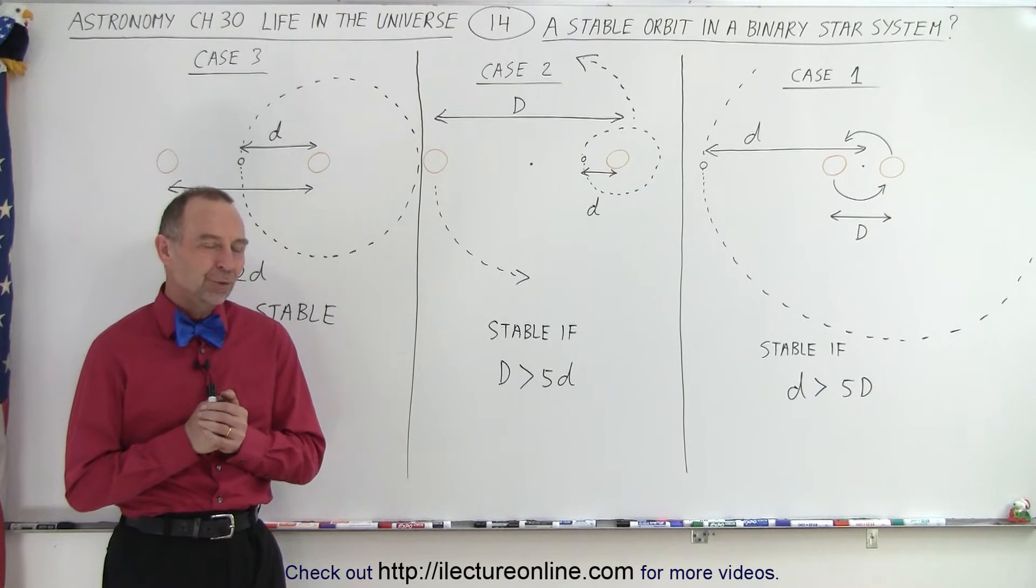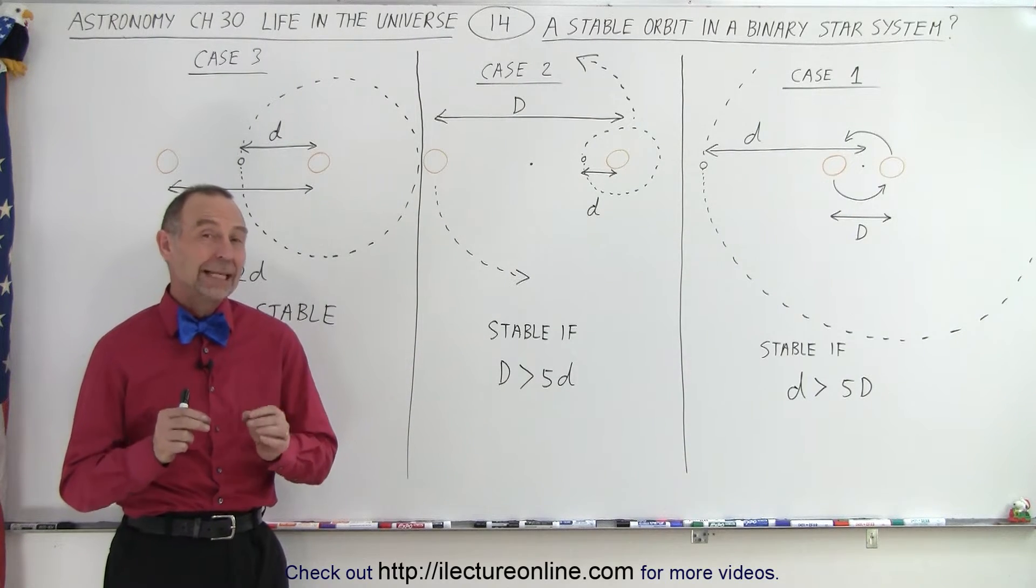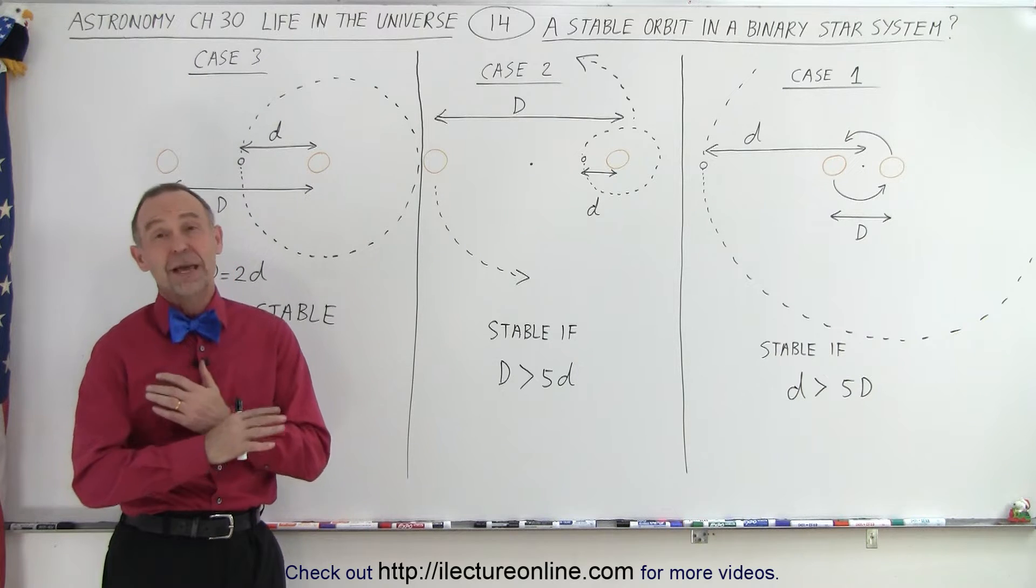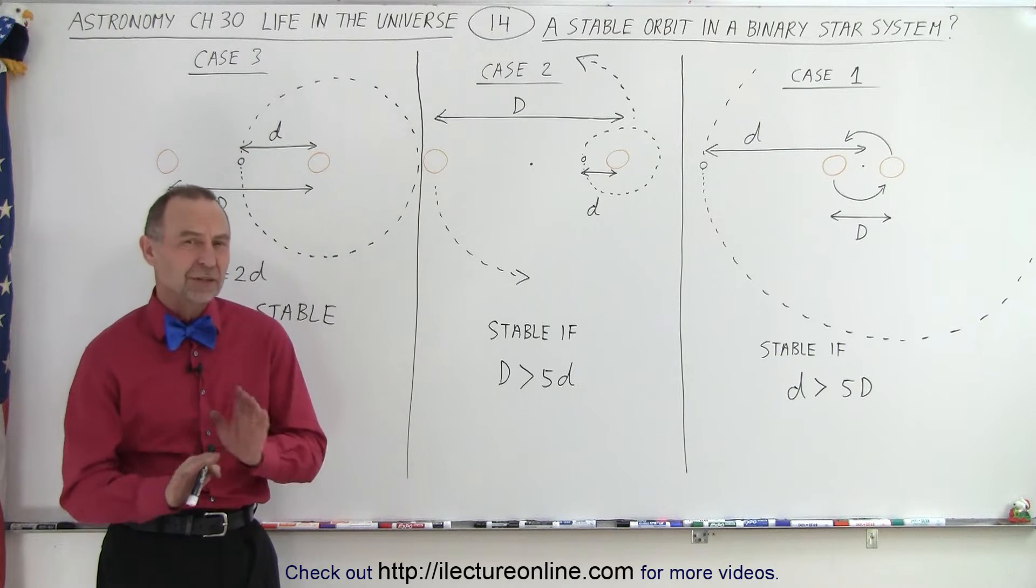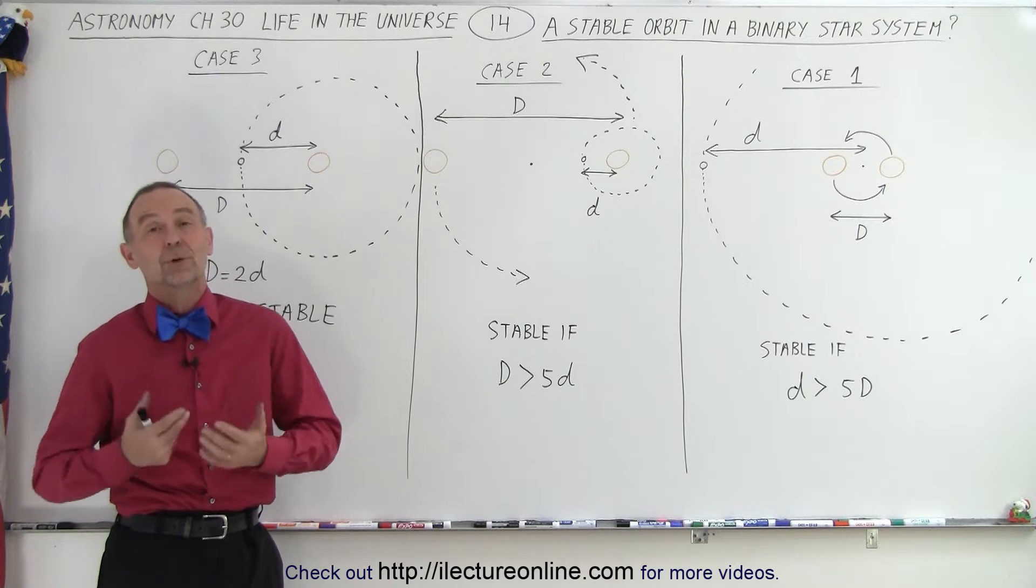Welcome to iLecture Online. So if we find a planet in a binary star system, does that automatically mean don't start looking for life because it's not possible for that planet to have a stable orbit?